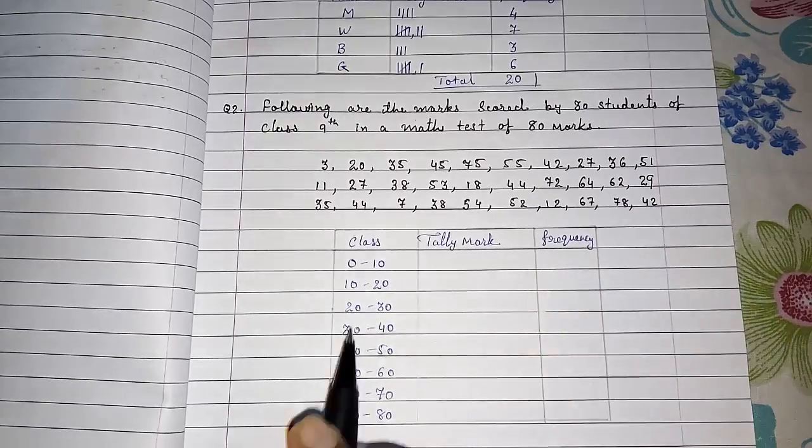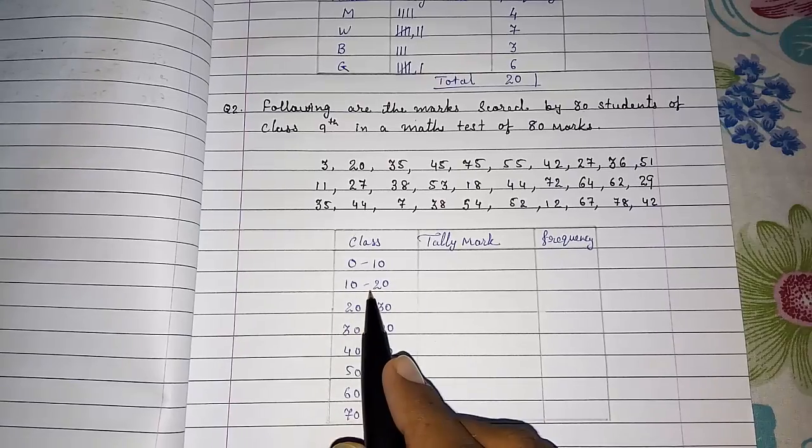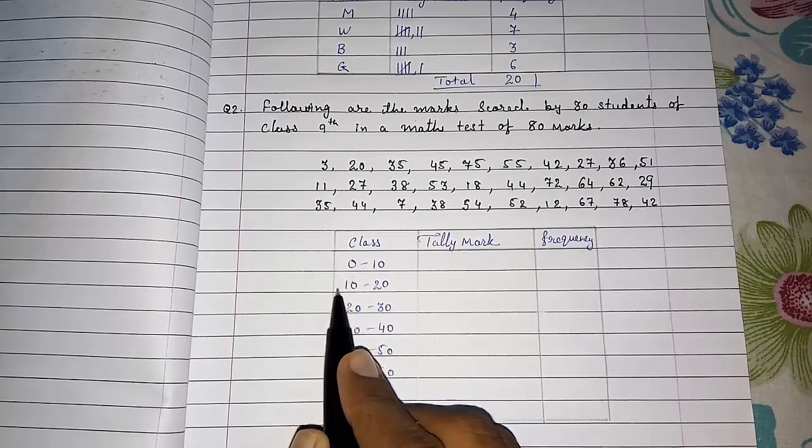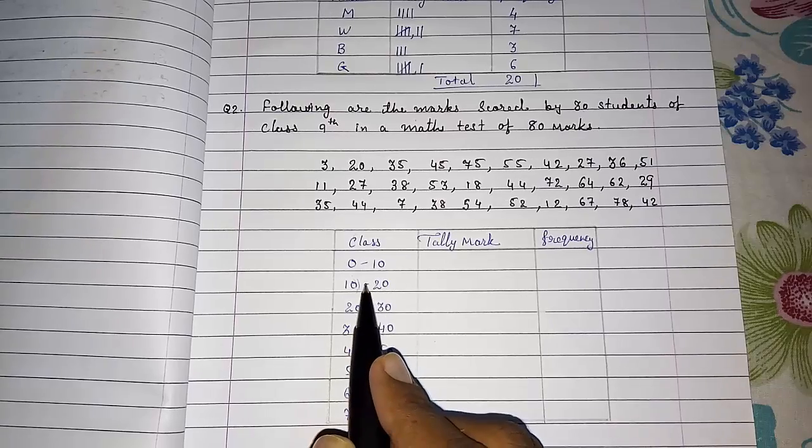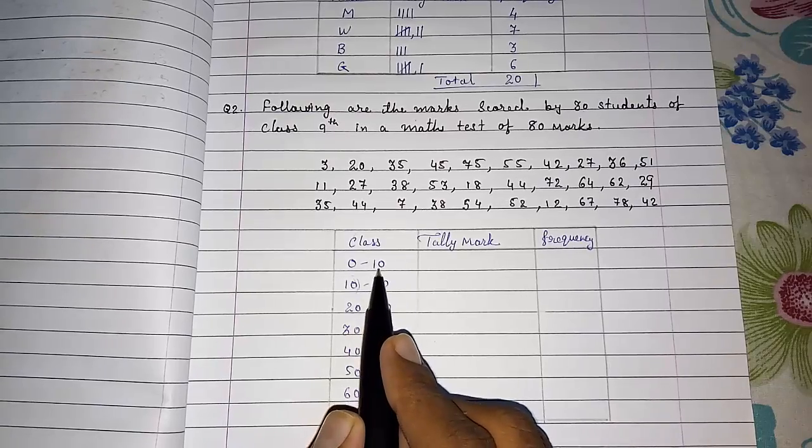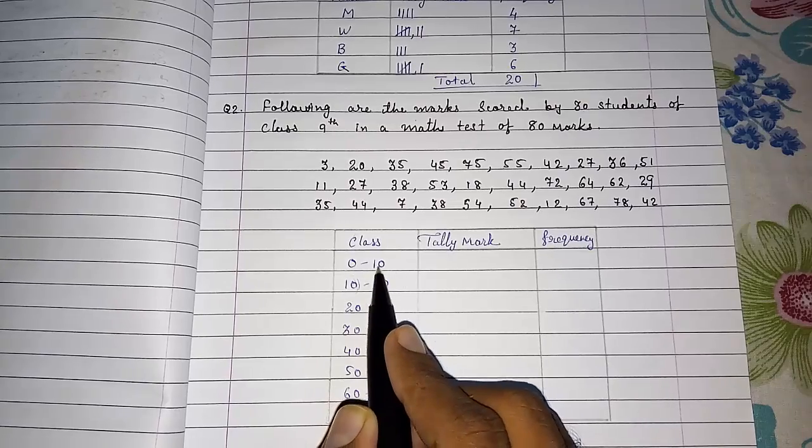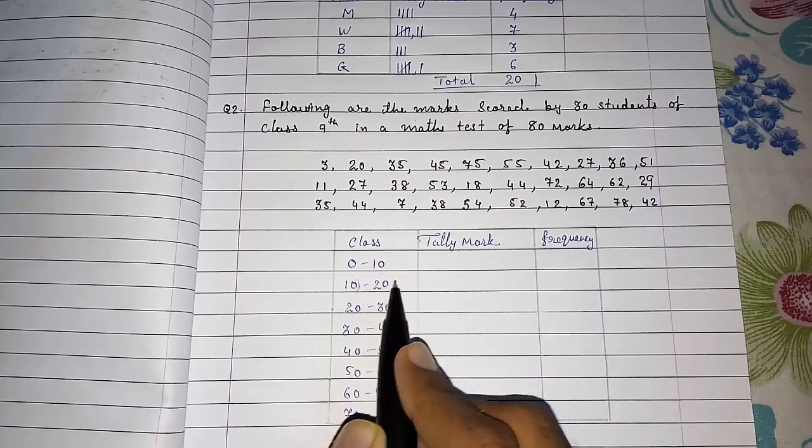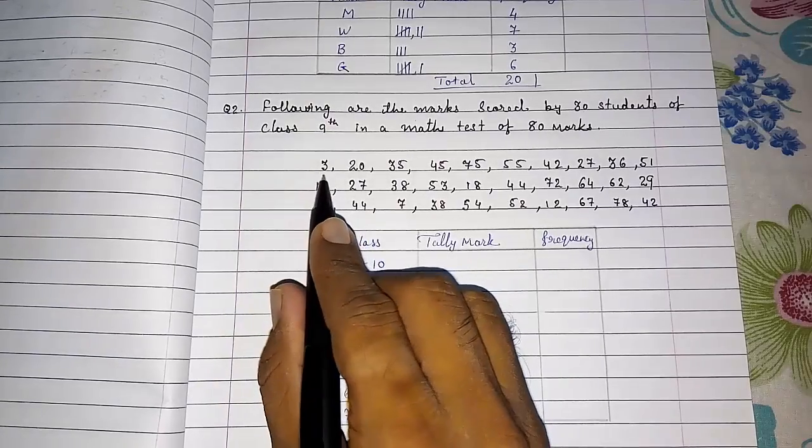Now this is tally mark and this is frequency. One problem arises here. If ten will come, where are you going to take ten? When ten will come you have to take it in the next number, means in the next class. In higher standard when you are doing statistics, there are two methods, but here we have to take it in the second class only.